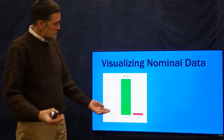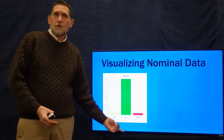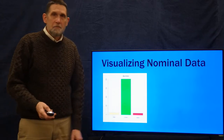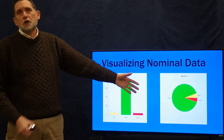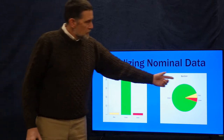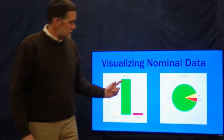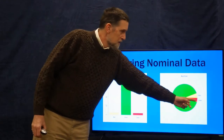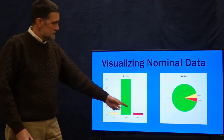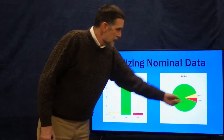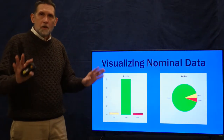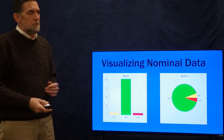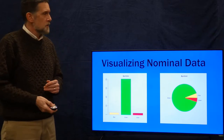In this sample of Sicilians, brown is by far the most common eye color. Some blue, some green, but mostly brown. We can see that in a pie chart also, where the green represents brown, the red represents green — a little confusing — and yellow represents blue. So we can visualize nominal data, and it helps us to interpret or see patterns.